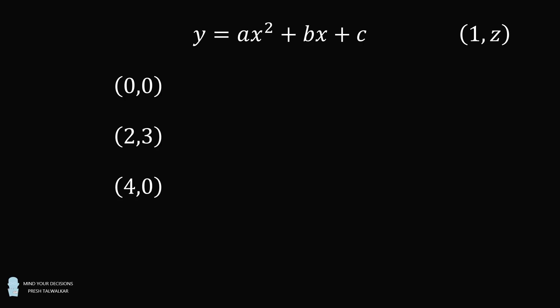We then have a system of three equations from these three points. So we first substitute in (0,0). This will allow us to solve that c is equal to 0. Using c is equal to 0, we'll substitute in the point (2,3). We can then simplify this equation: 3 is equal to 4a plus 2b.